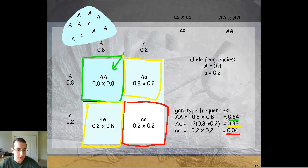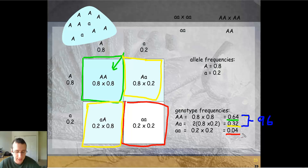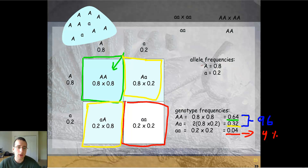To calculate phenotype frequencies, you add the two dominant-looking genotypes together: 0.64 plus 0.32 equals 96% of the population will look dominant. The genotype frequency of the homozygous recessive matches the recessive phenotype frequency, so 4% will look recessive — adding up to 100%. So based on the allele frequencies of the parental generation, you can figure out the genotype and phenotype frequencies in the offspring.